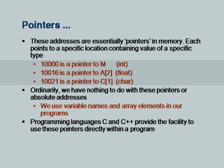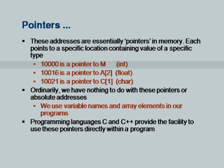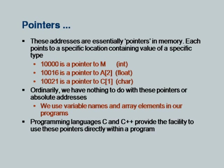Why do we bother about these addresses? Ordinarily we have nothing to do with these pointers or absolute addresses. We use variable names and array elements in our program. Whenever we use a variable name like M, we imply its value — say 573. As programmers, our life is limited to variable names and array elements which represent values of specific types. However, programming languages such as C and C++ provide the facility to use these pointers directly within a program.